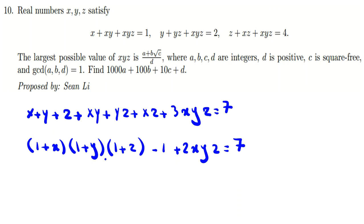We can conclude (1 + x)(1 + y)(1 + z) = 8 - 2xyz. Also, let's consider one of them, for example x + xy + xyz = 1.